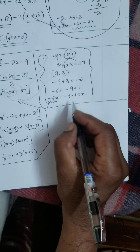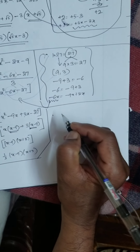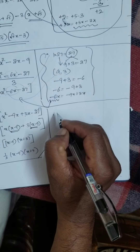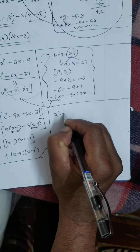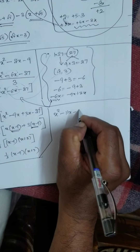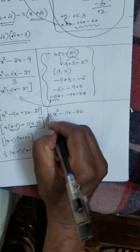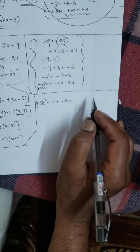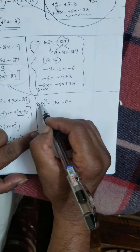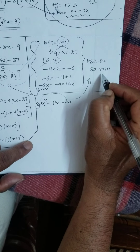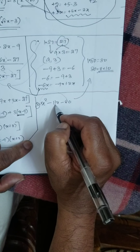See, next: x² minus 11x minus 80. How to do this? Third sum — each sum you have to take only one minute. 1 into 80 is 80. 80 can be written as 8 into 10 — can you make 11? It is not possible. 4 into 2 into 10 gives 20 — also not possible.